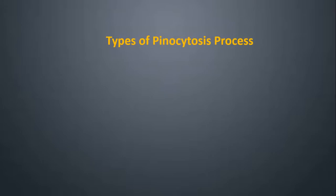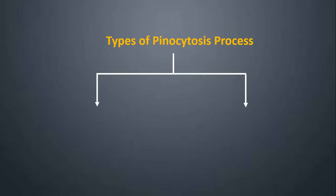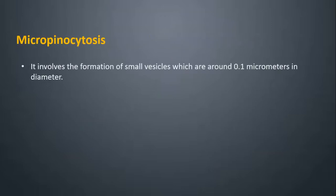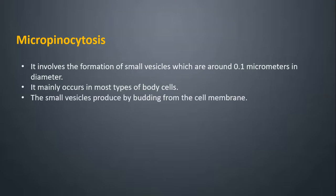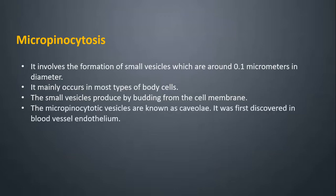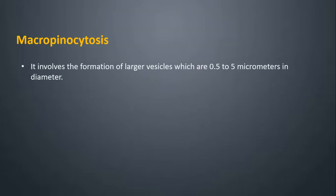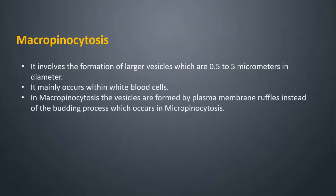Types of pinocytosis: There are two main processes by which pinocytosis occurs — micropinocytosis and macropinocytosis. Micropinocytosis involves the formation of small vesicles which are around 0.1 micrometers in diameter. It mainly occurs in most types of body cells. The small vesicles are produced by budding from the cell membrane. The micropinocytotic vesicles are known as caveoli, first discovered in blood vessel endothelium. Macropinocytosis involves the formation of larger vesicles which are 0.5 to 5 micrometers in diameter, and mainly occurs within white blood cells.